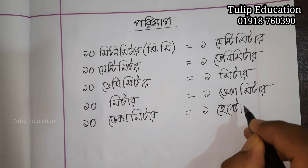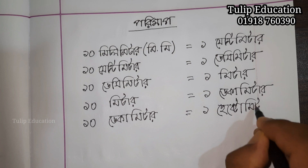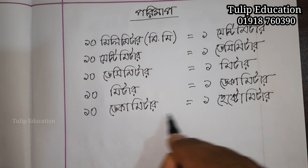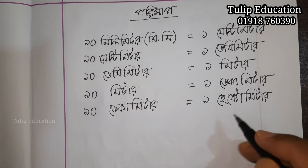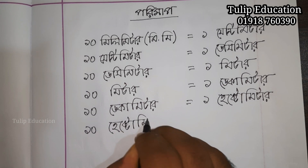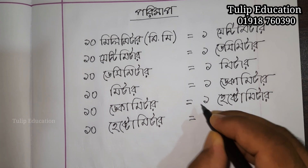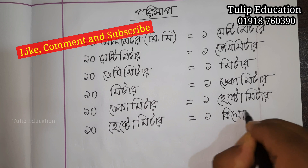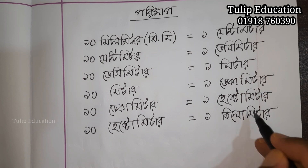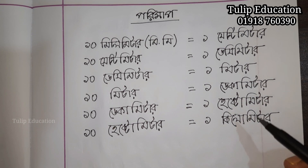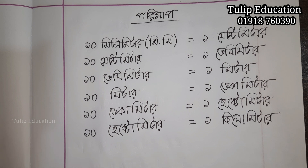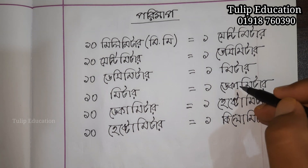How much decameter is 1 hectometer? How much decameter is 10 hectometer? How much decameter is 1 hectometer?